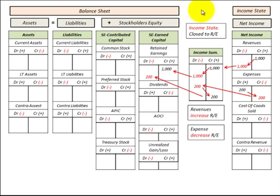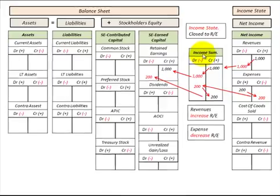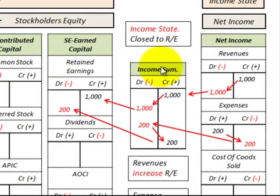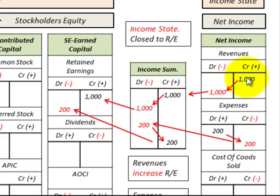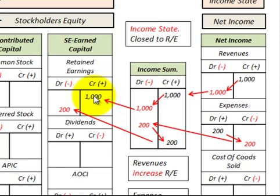Let's take a close look at this income summary account to see how the debits, credits, and closing entries work. We've got the balance sheet with retained earnings, then the temporary income summary account, and then the net income. Say we had an ending amount of $1,000 in revenues. To close out this revenue account, we would debit the $1,000 to the revenue account and credit $1,000 to the income summary account. Then to close income summary out to retained earnings, we would debit $1,000 to income summary and credit $1,000 to retained earnings.